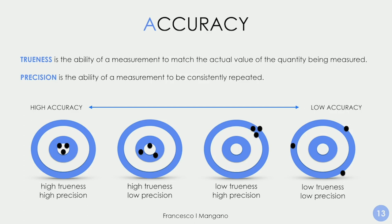When we talk about intraoral scanner accuracy — trueness plus precision — precision means the repeatability of the scan, the ability of a measurement to be consistently repeated. Trueness is the most important: it is the ability of a measurement to match the actual value of the quantity being measured. We need both in order to have a highly accurate scanner, and it has to reconstruct the surface of the object exactly as it is, in a very consistent way without any error.